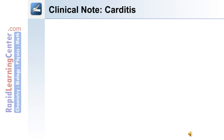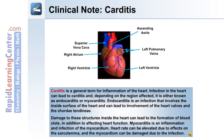The following is a clinical note on carditis. Carditis is a general term for inflammation of the heart. Infection in the heart can lead to carditis, and depending on the region affected, it's either known as endocarditis or myocarditis. Endocarditis is an infection that involves the inside surface of the heart, and this can lead to the involvement of the heart valves and the chordae tendineae. Damage to these structures inside the heart can lead to the formation of blood clots in addition to affecting heart function.